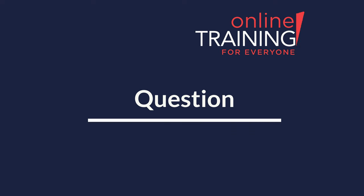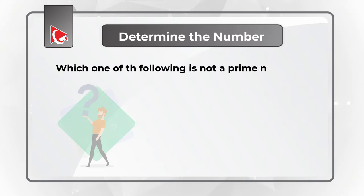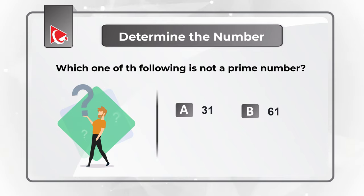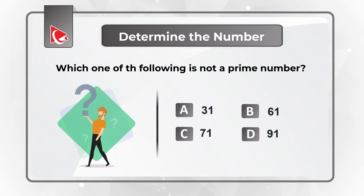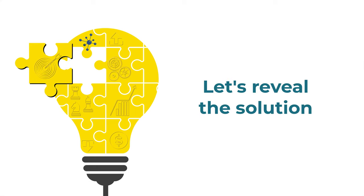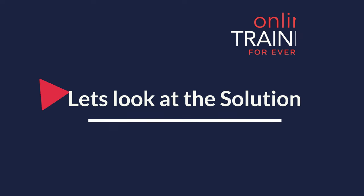Here is an interesting question where you're presented with a set of numbers and you need to determine which number is not a prime number. You have four different choices: Choice A, 31; Choice B, 61; Choice C, 71; and Choice D, 91. Give yourself a little bit of time — maybe recall the definition of prime numbers and see if you can come up with the solution.